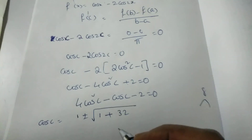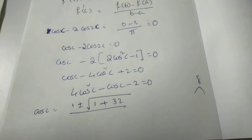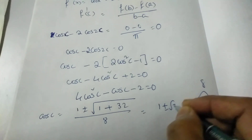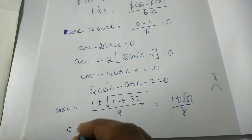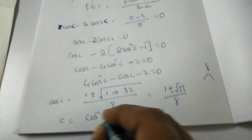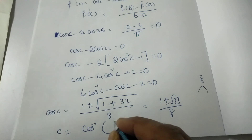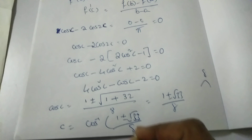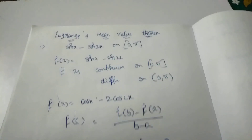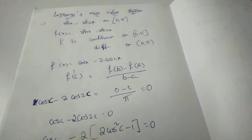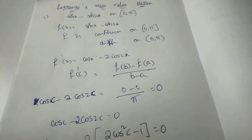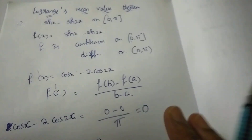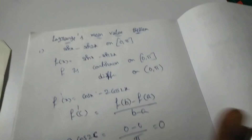Therefore c = cos⁻¹[(1 ± √33) / 8]. This is the value of c for Lagrange's Theorem. That's the method for both Rolle's Theorem and Lagrange's Theorem. Please watch all the videos for good information. Thank you!